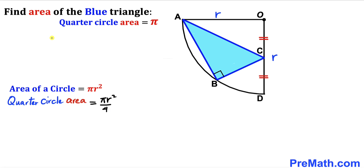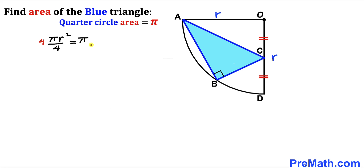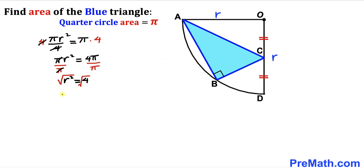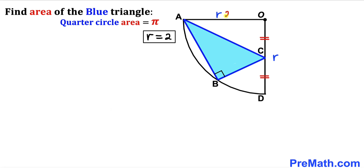So I can equate them: π r squared divided by 4 equals π. Multiplying both sides by 4 removes the fraction, giving π r squared equals 4π. Dividing both sides by π, we get r squared equals 4. Taking the square root of both sides, our radius r turns out to be 2.